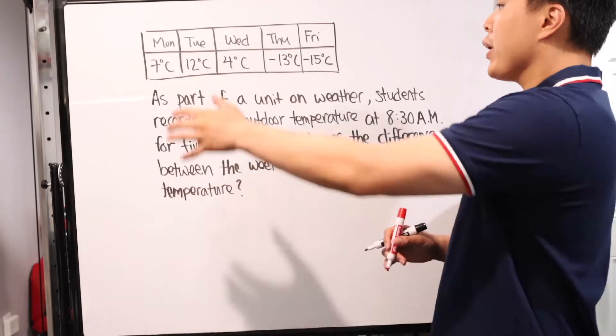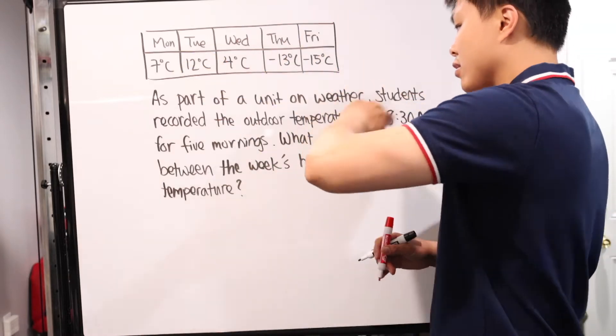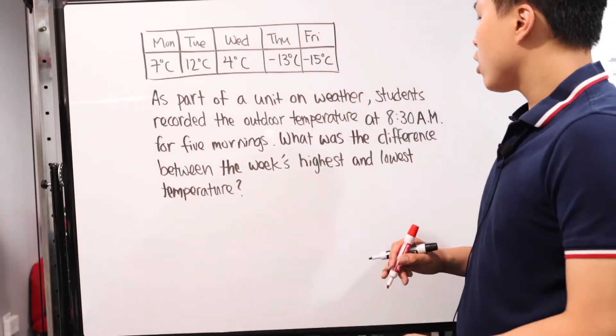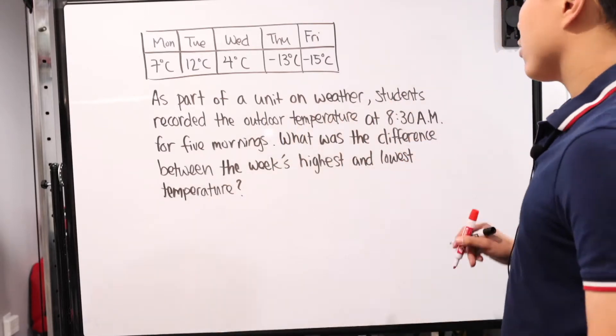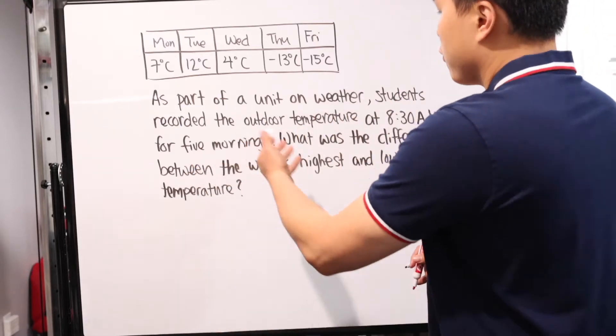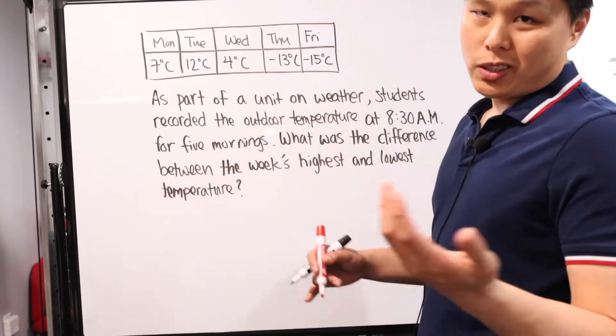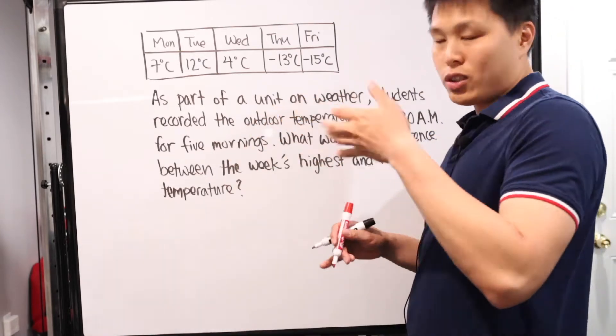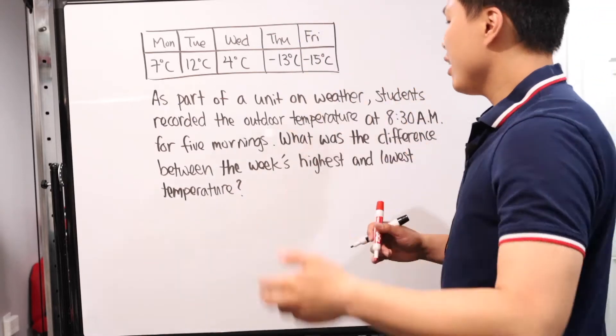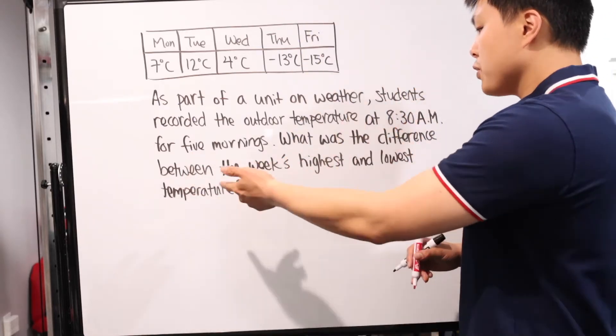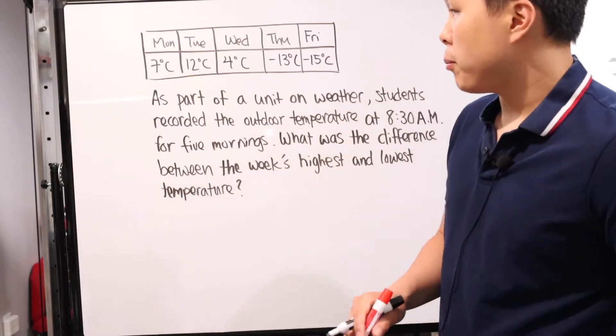Our second question. We have this little table and word problem. As part of a unit on weather, students record the outdoor temperature at 8:30 a.m. for five mornings. This is just telling you it's well-designed, they're all taking the temperature at the exact same time. What was the difference between the week's highest and lowest temperature?